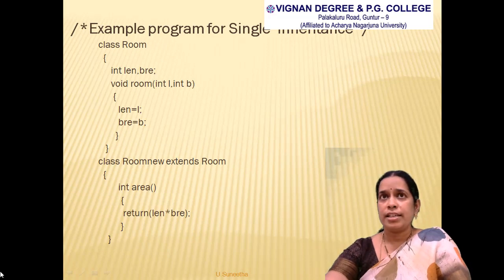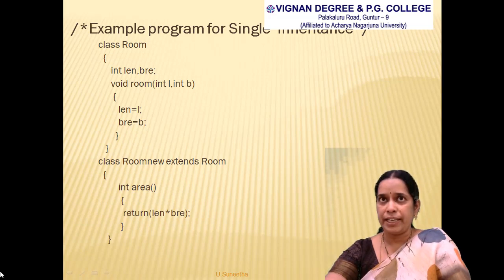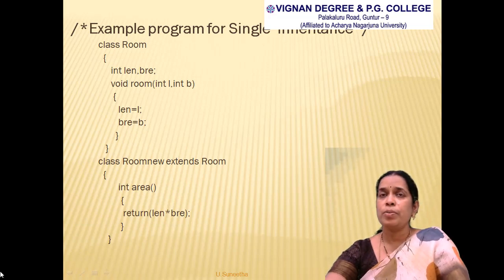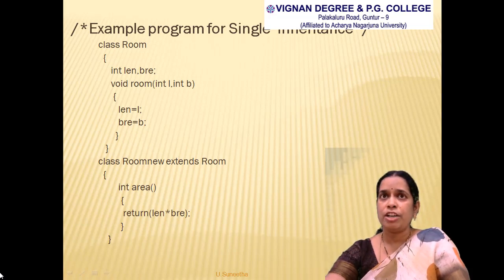In this single inheritance example, the first class is 'Room', which has two integer variables: 'len' and 'bre'. It has a method 'room' with return type void, taking two parameters 'l' and 'b'. Within the body, the value of 'l' is stored in 'len' and the value of 'b' is stored in 'bre'. Then the method and class are closed.